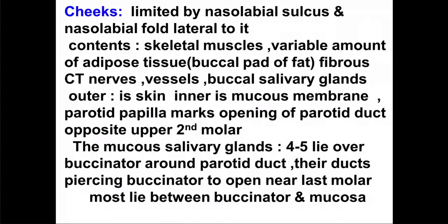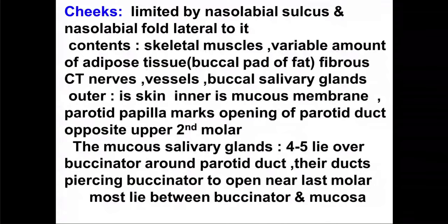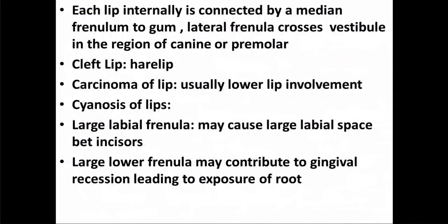There are also some accessory parotid glands — usually four or five — that lie over the parotid gland and over the buccinator. Their ducts also pierce the buccinator and open near the last molar teeth. They lie between the buccinator and the mucosa, and their ducts are very minute and cannot normally be seen with the naked eye.